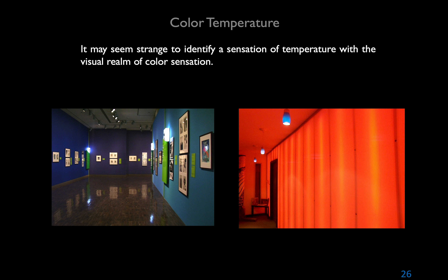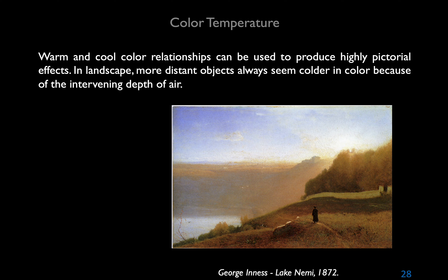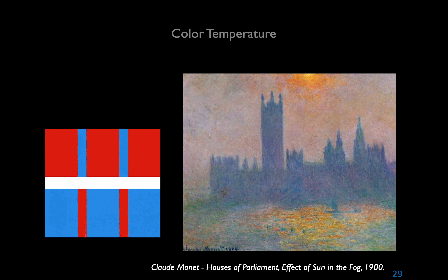It may seem strange to identify a sensation of temperature with the visual realm of color. However, experiments have demonstrated a difference of five to seven degrees in subjective feeling of heat or cold between a workroom painted in blue-green and one painted in red-orange — in the blue-green room occupants felt 59°F was cold, whereas in the red-orange room they did not feel cold until 52 or 54°F. Objectively, blue-green slows circulation and red-orange stimulates it. Cool colors therefore recede while warm colors advance.